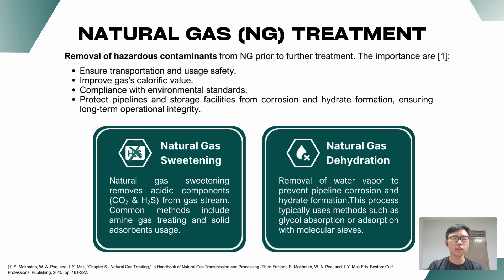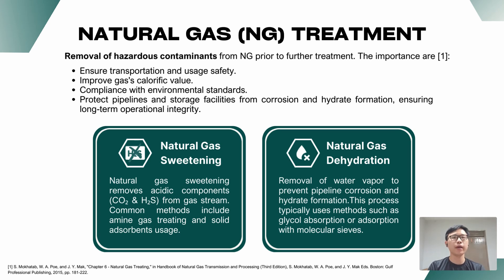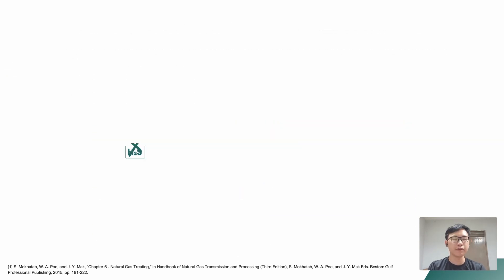Contaminants such as water content and acid gases should be removed from the natural gas stream to ensure transportation and usage safety, to improve the calorific value of gas, to comply with environmental standards and regulations, and to ensure long-term operational integrity by protecting pipelines and storage facilities from corrosion and hydrate formation.